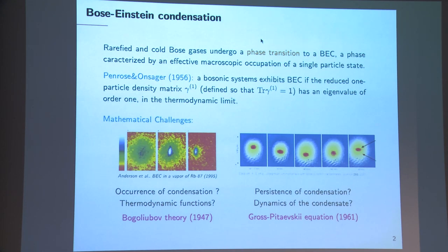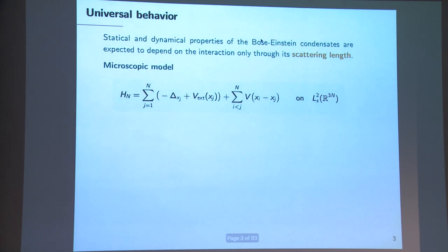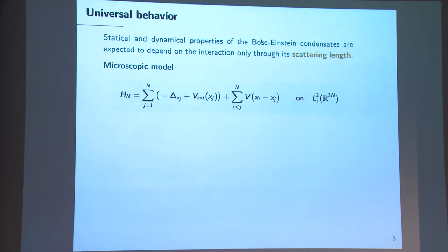There are also interesting questions from the point of view of dynamics — understanding if condensation is preserved during the dynamics, what the effective evolution is, and what the fluctuations around this effective evolution are — but I don't have time to enter into this topic. For today we will stick to the static properties of Bose-Einstein condensates. A key feature is that equilibrium and non-equilibrium properties do not depend on the fine details of the interaction, which only enters through its scattering length.